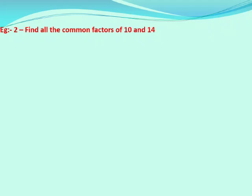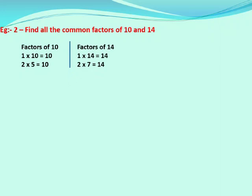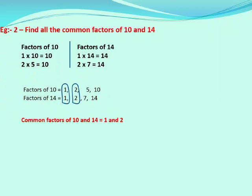Find all the common factors of 10 and 14. First, find out all the factors of 10: try 1 — 1×10=10; try 2 — 2×5=10; try 3 and 4 — not possible. Factors of 10 are 1, 2, 5, and 10. Now factors of 14: try 1 — 1×14=14; try 2 — 2×7=14; try 3, 4, 5 — not possible. Factors of 14 are 1, 2, 7, and 14. The common factors for both are 1 and 2. So 1 and 2 are common factors of 10 and 14.